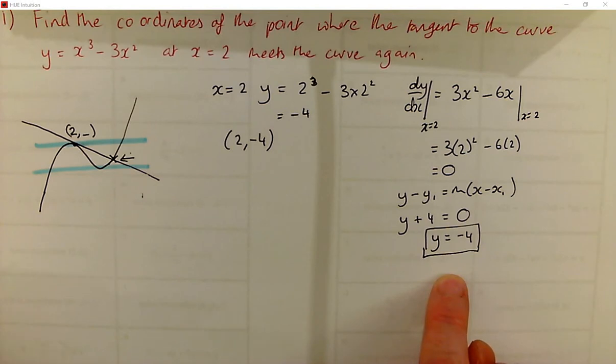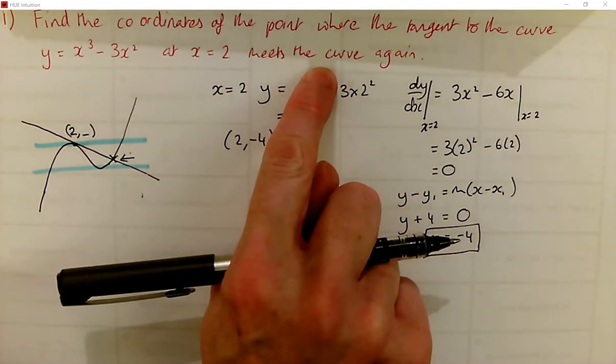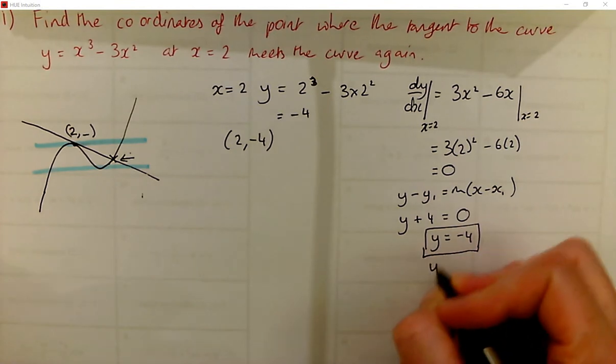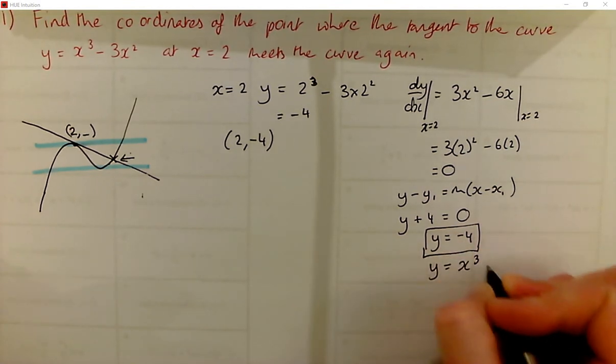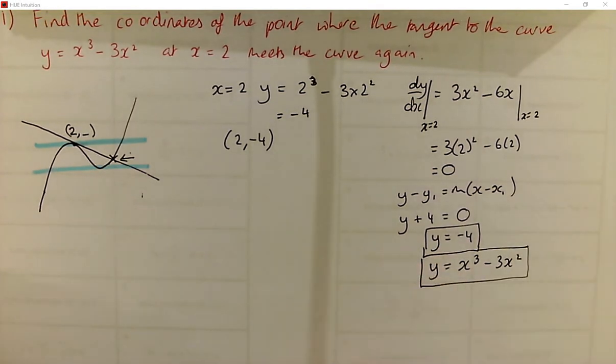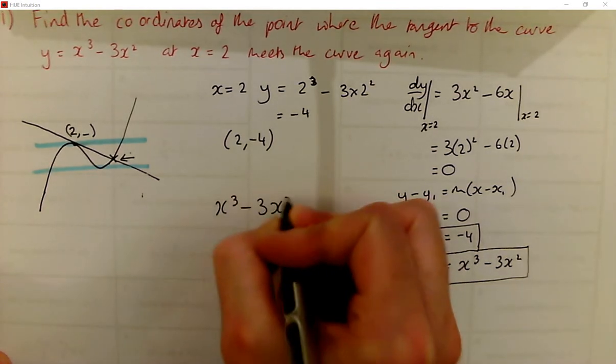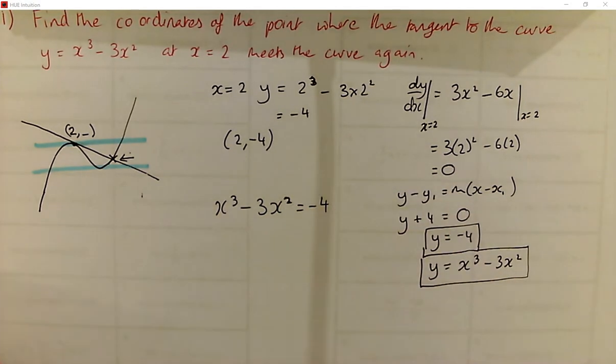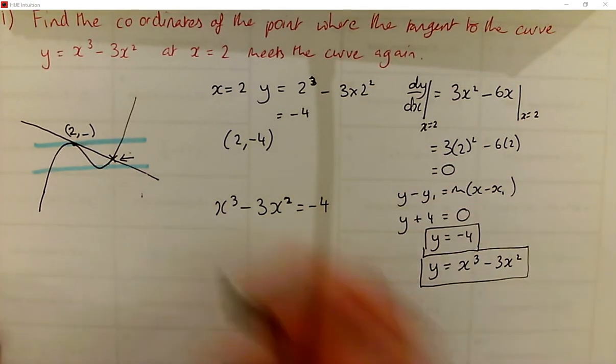Now, to find where it meets the curve again, we solve simultaneously with the equation of the curve. So that's y equals x cubed minus 3x squared. So we can just equate this because we've both got y on one side. So we've got x cubed minus 3x squared equals negative 4. So that's not entirely straightforward because it's a cubic to solve.